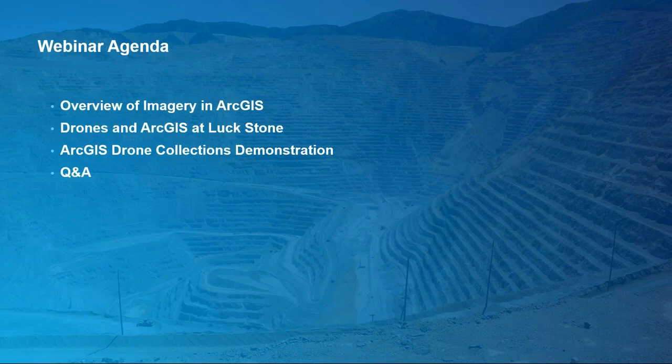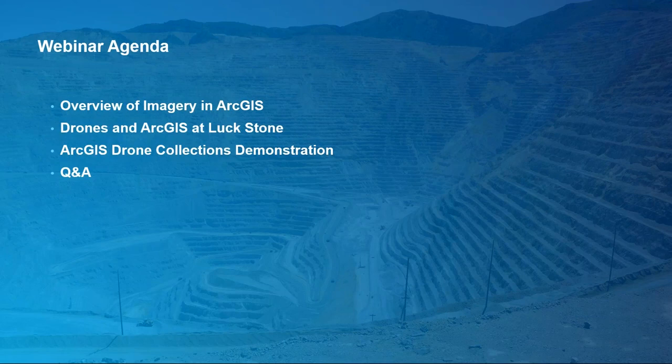Let's take a look at today's agenda. First, I'm going to give a brief overview of imagery in ArcGIS. Second, Patrick and John from Luckstone will show us how they're integrating drones into their ArcGIS workflows to drive business value. Then, my colleague Nico is going to demonstrate the new ArcGIS Drone Collections, which are an end-to-end UAS solution for companies looking to leverage drones. We'll wrap up with a question and answer session.